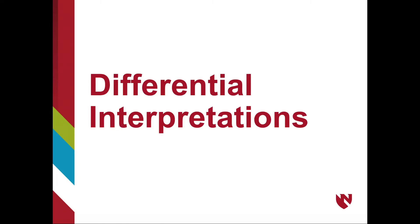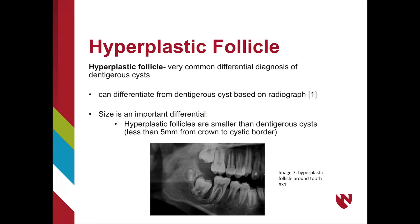Some differential diagnoses for dentigerous cysts include ameloblastomas, odontogenic keratocysts (OKC), and hyperplastic follicles. A hyperplastic follicle can be differentiated from a dentigerous cyst on a radiograph based on size. A hyperplastic follicle is smaller than a dentigerous cyst, measuring less than 5 mm from the crown to the cystic border.